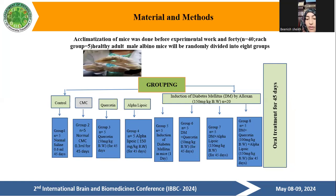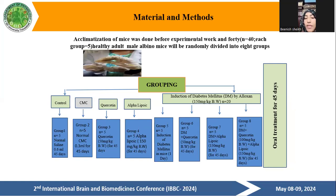Group three: quercetin, 50 mg per kg body weight for 45 days. Group four: alpha lipoic acid, 150 mg per kg body weight for 45 days. Other groups involved induction of diabetes mellitus by 150 mg per kg body weight, with n equal to 20.